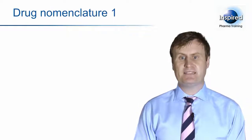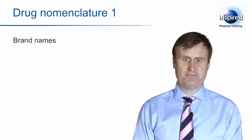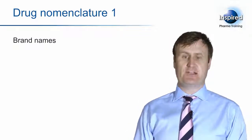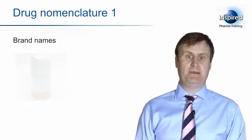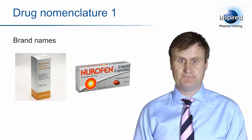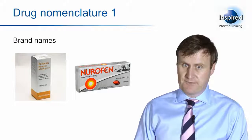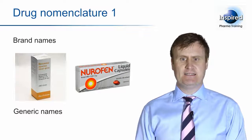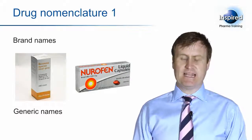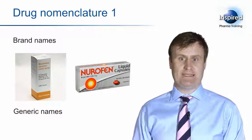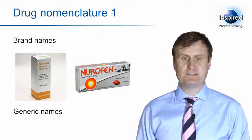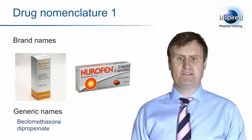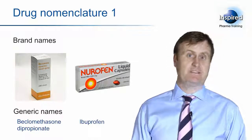Medicines are normally marketed under their brand names. This is the name or brand given to the medicine by the pharmaceutical company selling the product — for example, Beconase or Nurofen. However, the formal or generic name must be applied to their active ingredient, and this has to be clearly seen on the pack. In the case of these two products, the generic names are beclomethasone dipropionate and ibuprofen respectively.